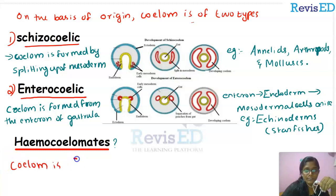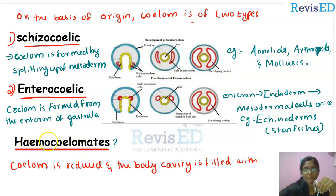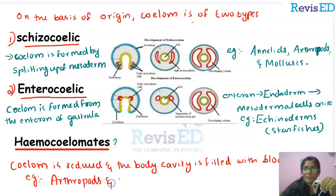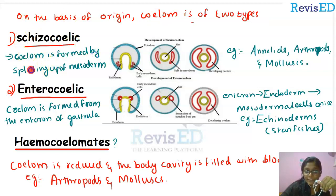Now, what are haemocoelomates? This group was not included in the previous classification. Their coelom is very much reduced, and the body cavity is filled with blood. Examples are arthropods and molluscs, whose body cavity is completely filled with blood or haeme — and so they are called haemocoelomates.